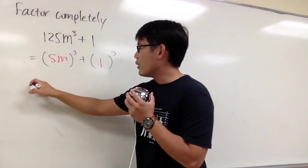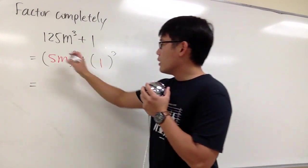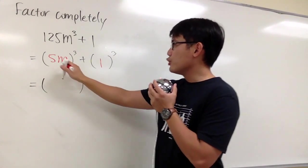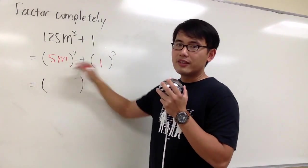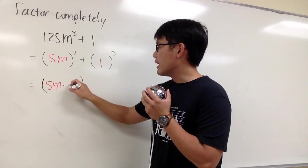This is how we factor the sum of two cubes. Put them in this format, and we know our first parenthesis is going to be a plus b. What's inside the parenthesis? We have 5m plus 1.